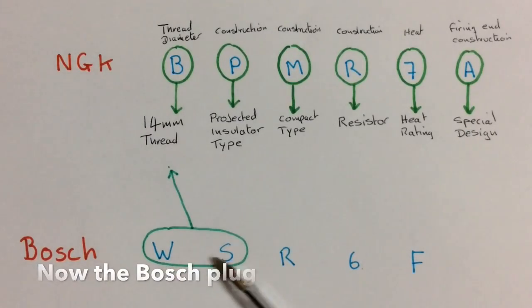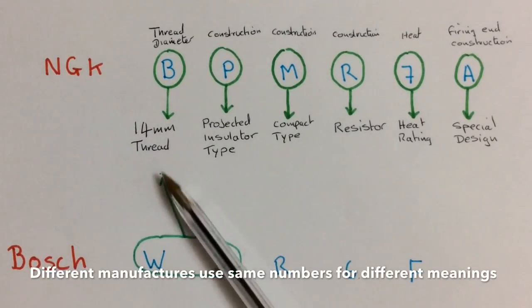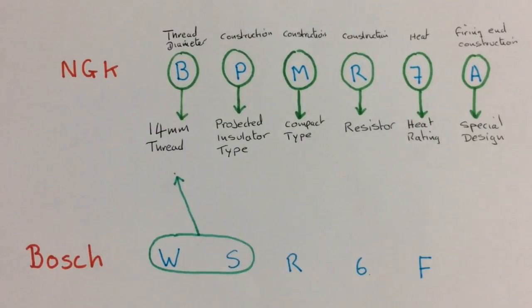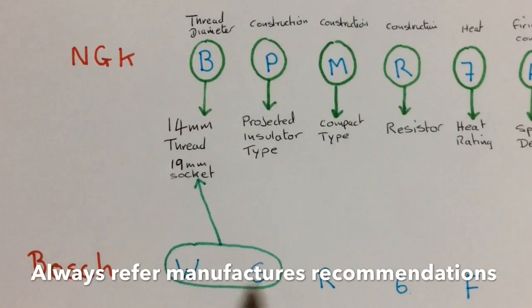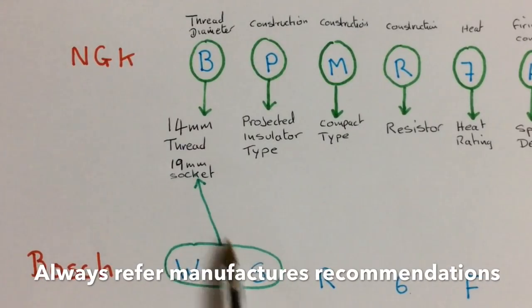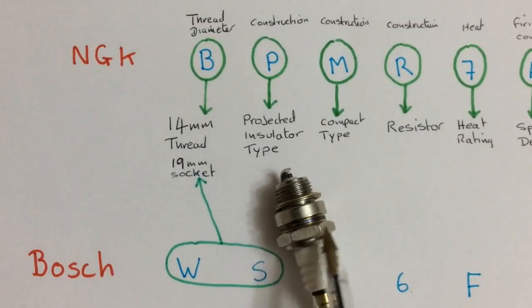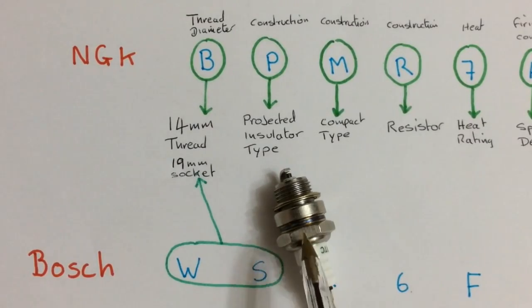together they mean the same as the B on the NGK, 14 mil thread. But in addition, Bosch also add that this code also means 19 mil socket. And all that means is this part here, the hexagon part here, the socket size part. So that's quite descriptive.